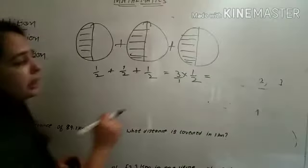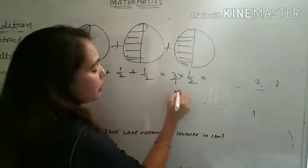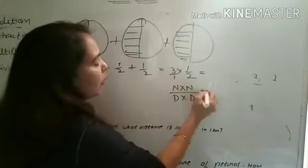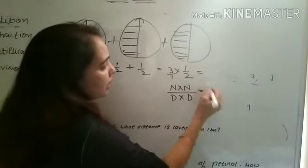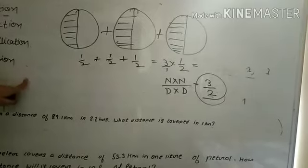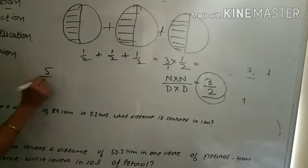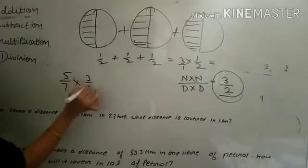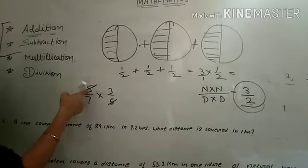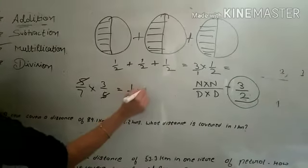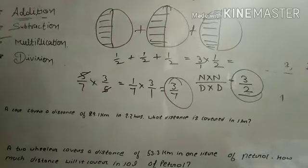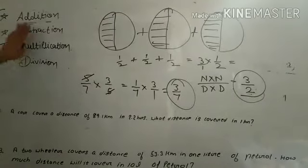In this multiplication concept, the rule is: numerator multiplied by numerator, and denominator multiplied by denominator. So 3 times 1 is 3, and 1 times 2 is 2, giving 3 by 2. For example, if we multiply 5 by 7 with 3 by 5, we can reduce or cancel - 5 cancels with 5. What remains is 1 by 7 and 3 by 1, so the answer is 3 by 7. This is the multiplication of fractions - a very easy topic.